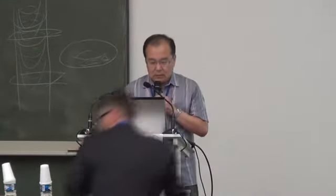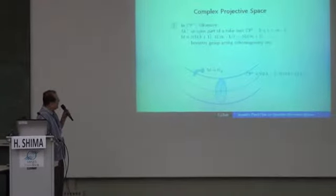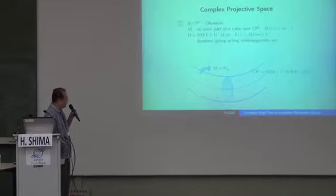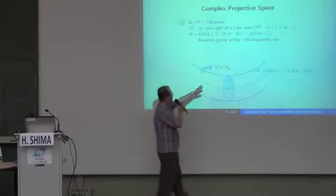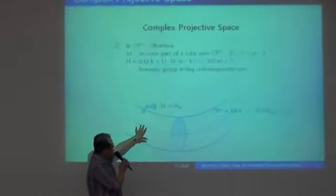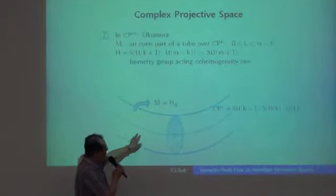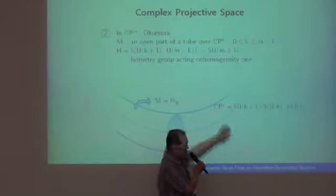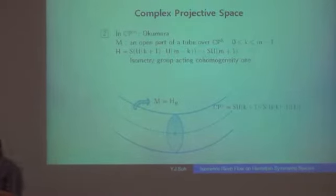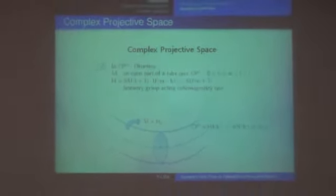For example, I would like to introduce the result of Okumura. In 1996, he proved that for hypersurfaces in complex projective space with isometric Reeb flow, M is given like this — M is a tube over a totally geodesic complex projective space CPk. This was already known since 1970. And after this, Montiel-Romero solved this kind of problem for complex hyperbolic space.